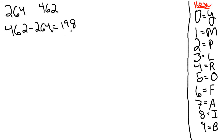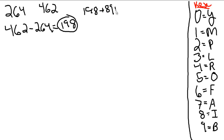All right, so you've got 198 here. Now, add this number to the reverse of this number. So we're going to add 198 plus 891, and that equals 1,089.